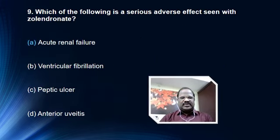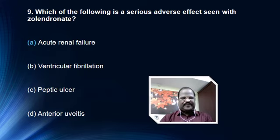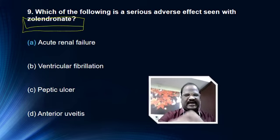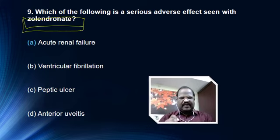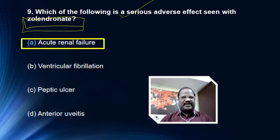Next question: which of the following is the serious adverse effect seen with zoledronic acid? Options are acute renal failure, ventricular fibrillation, peptic ulcer, and arrhythmias. Remember, zoledronic acid is a bisphosphonate given intravenously. The most important problem with intravenous bisphosphonates is flu-like symptoms. But asking which is the serious problem — it is nephrotoxicity, acute renal failure.